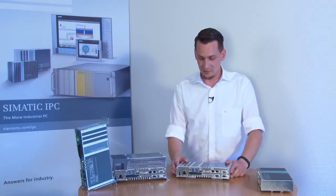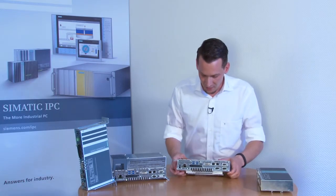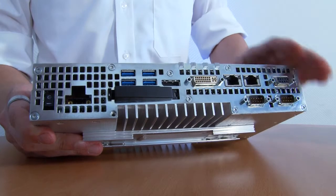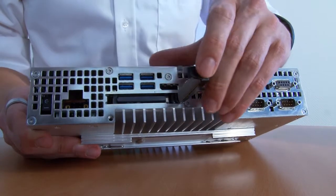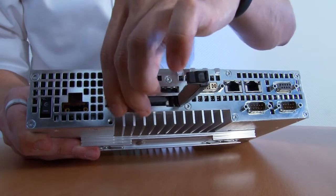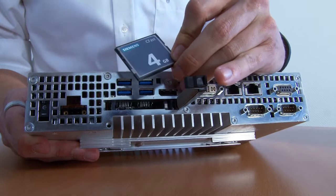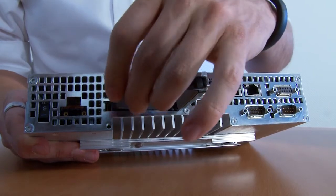Now I would like to explain a few service options you have with the new MicroBox. First, I would like to show you the external CFAST slot. With the MicroBox and a PC, you can very easily remove the mass storage drive and replace it with a new one.